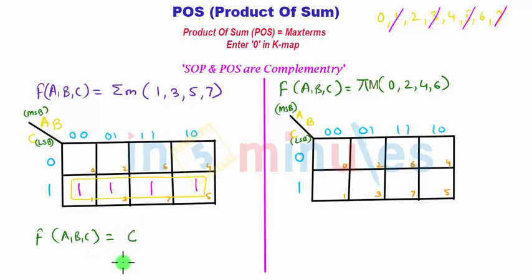And why am I calling SOP form and POS form complementary to each other? Because if there is a three input combination ABC out of which 1, 3, 5, 7 are given to SOP form, then the equivalent POS form can be obtained by the remaining bits. Now what are those remaining bits?